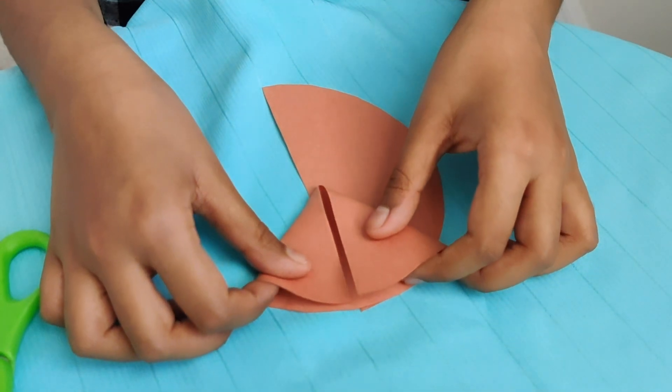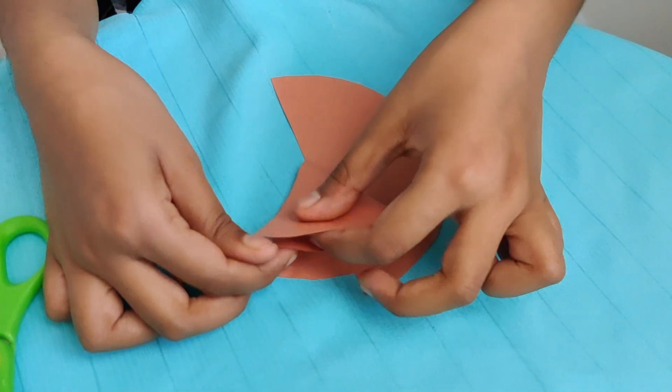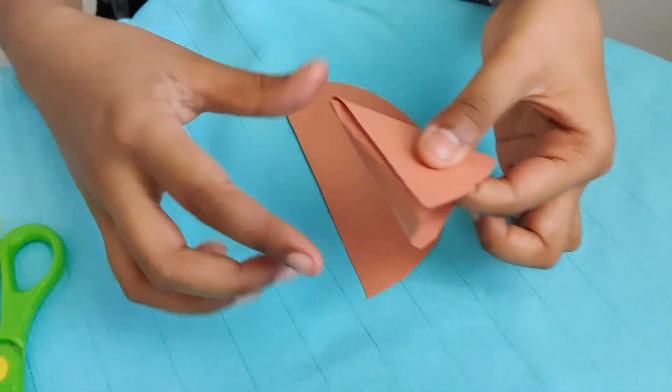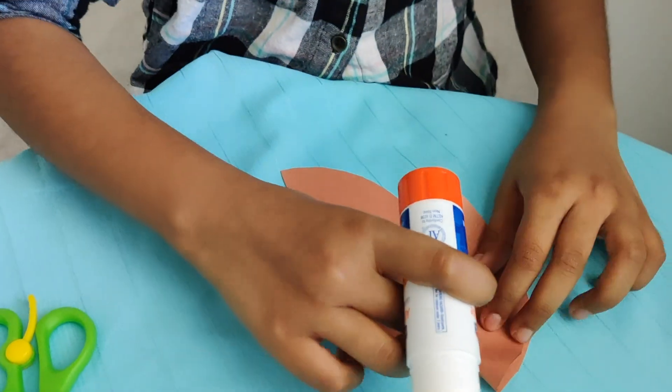Put it like this, then take this one so you get an ice cream shape. Apply some glue on it.